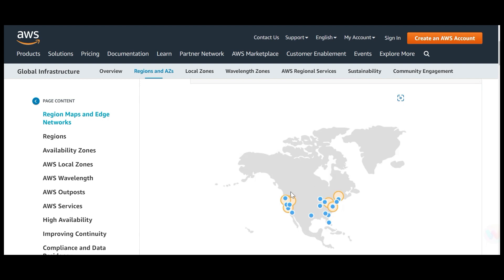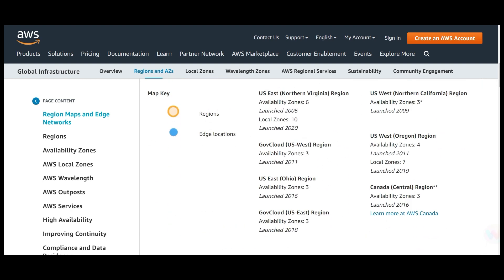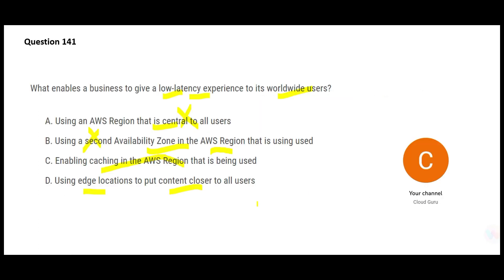You can visit the AWS documentation to see all the regions, availability zones, and edge networks. This is the best option — Netflix gives you low latency because they put the content closer to the user using edge locations. Caching alone will not help; you have to bring the content closer to the users, and edge locations is the mechanism to do that. So D is the final answer.